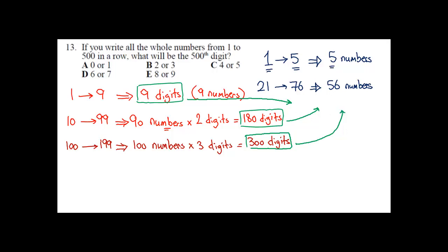Now let's add these numbers together. So 9 digits plus 180 digits plus 300 digits equals 489 digits.